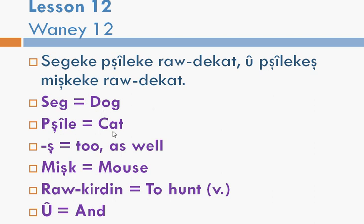Sag means dog. The ka suffix acts like 'the'. The ka suffix is like saying 'too' or 'as well' — there's no direct place for it in English translation, it is just enough to say 'and'. Raudakat, which means 'hunts', comes from raukirdin. Mishka is a mouse. Let's go to the next page.